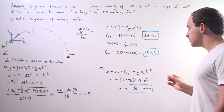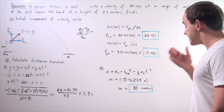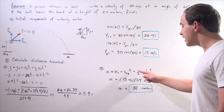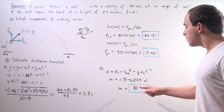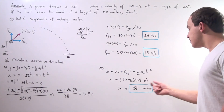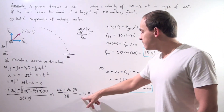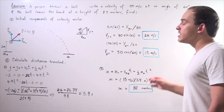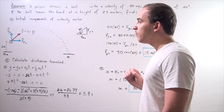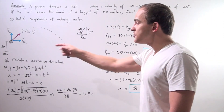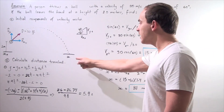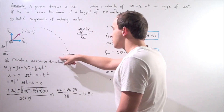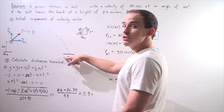We get approximately 81 meters using these calculations — though this is an approximation because we approximated 5.4 seconds. That means our displacement of the ball from the initial position to the final position is 81 meters.